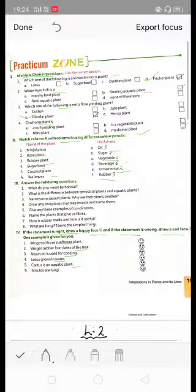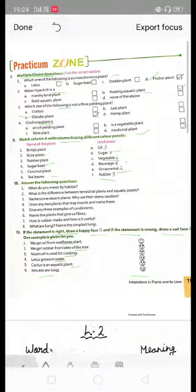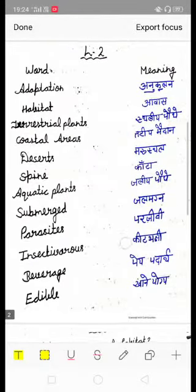Cactus is an aquatic plant? No, cactus is a desert plant so draw a sad face. Question number six is molds are fungi. Molds are fungi, this is correct so draw a smiley. Book work is done now.